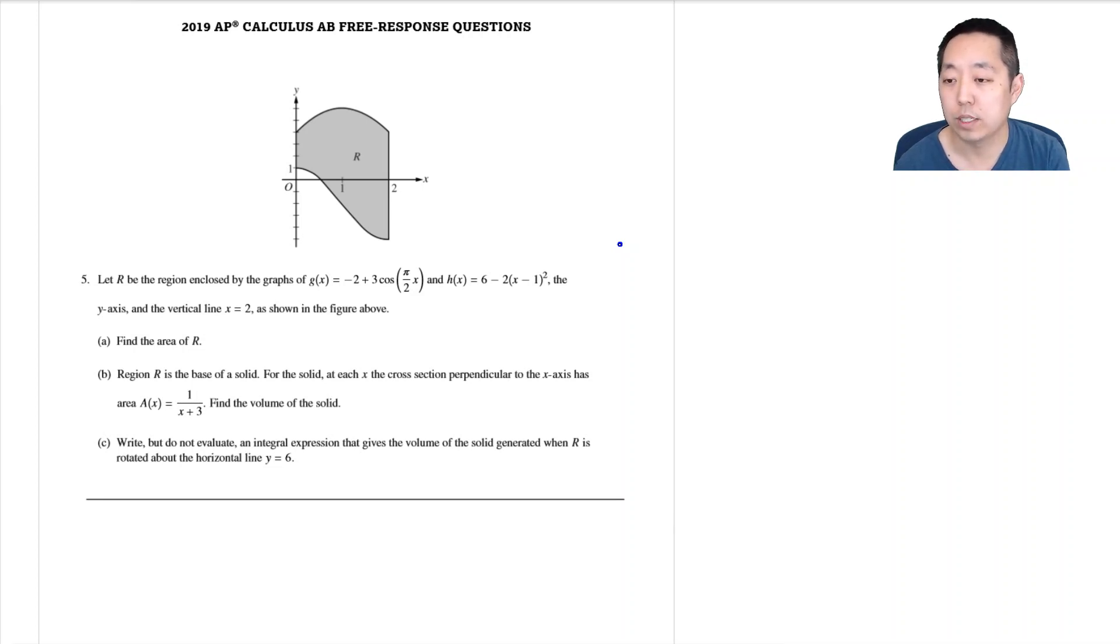So let R be the region enclosed by the graphs G of X and H of X. This one looks more like a cosine right here and this one looks like a parabola, so this is H of X right here, this is G of X. It's important to know which one's on top and bottom.